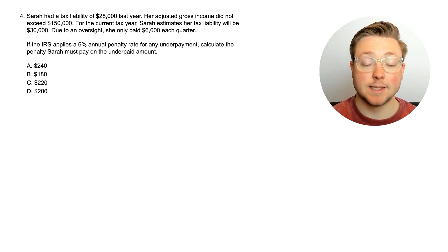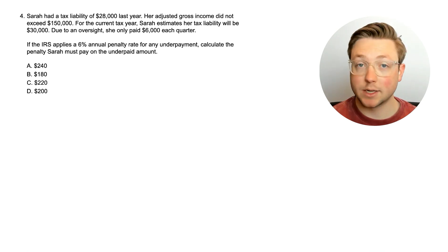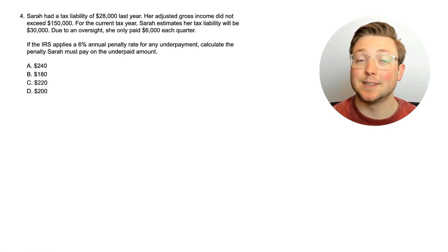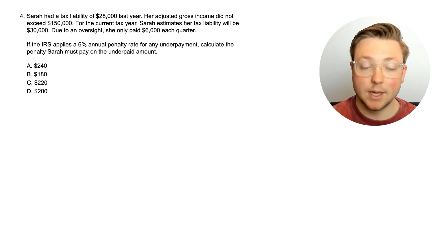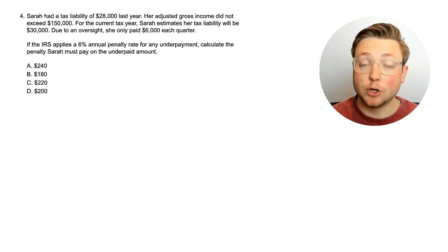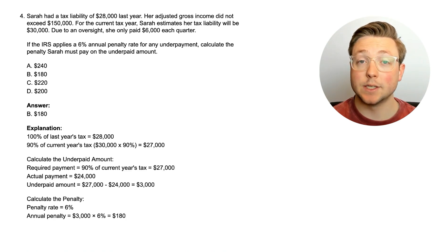Here is question four. Sarah had a tax liability of $28,000 last year. Her adjusted gross income did not exceed $150,000. For the current tax year, Sarah estimates her tax liability will be $30,000. Due to an oversight, she only paid $6,000 each quarter. If the IRS applies a 6% annual penalty rate for any underpayment, calculate the penalty Sarah must pay on the underpaid amount. The answer is $180.